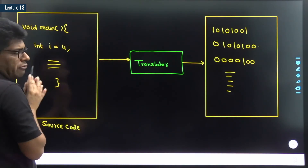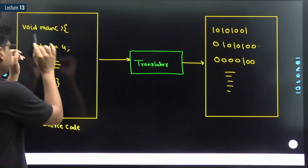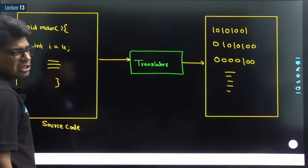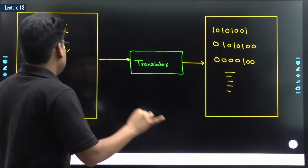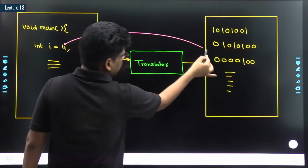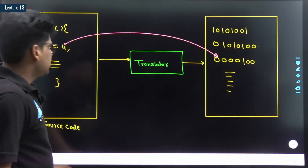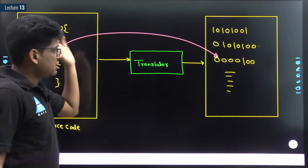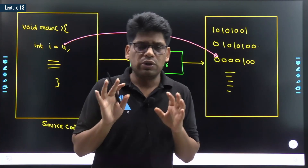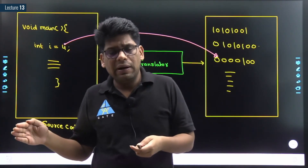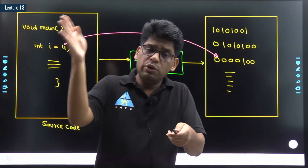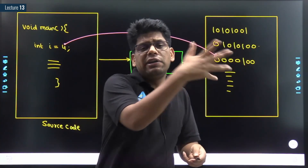Every piece of information is converted into 0 and 1. For example, this 4 is somehow converted into binary - 0 1 and so on. This 4, which is a number, is converted into a binary number. We understood this - a number in any number system can be converted to another number in a different number system.